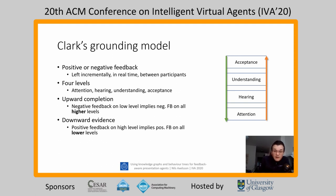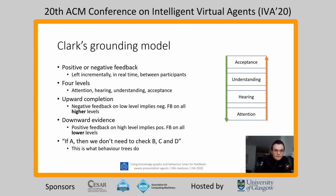Going the other way: if you give positive feedback on a high level, that implies positive feedback on all lower levels. So if you give explicit positive understanding by saying 'yes, I understand,' then you have also given implicit positive hearing and positive attention — you wouldn't be able to understand me if you didn't hear me, and you wouldn't hear me if you weren't paying attention. This kind of exclusion — where the existence of one signal means we don't need to check the others — is exactly why we think behavior trees are viable here. If A, then we don't need to check B, C, and D. That's exactly what behavior trees do.